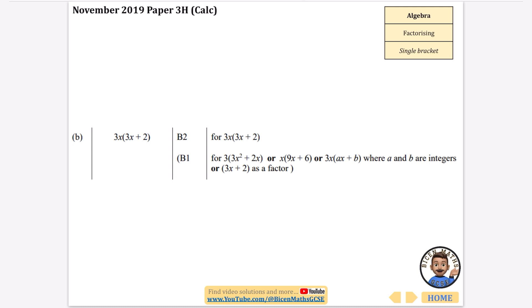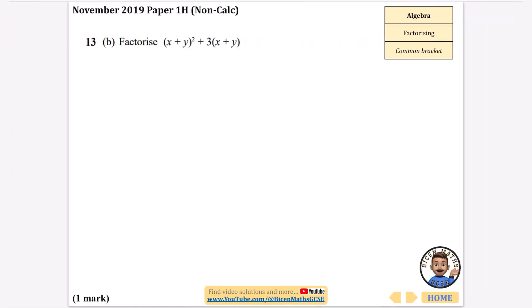This one is talking about having a common bracket. What I mean by this is if you look at this expression and this expression, the thing that they've got in common is x plus y. So normally we take out like a 2 or a 2x to the front, but this time we're actually going to take out a bracket. You think to yourself, what do I multiply x plus y by to get x plus y squared? You multiply it by an x plus y.